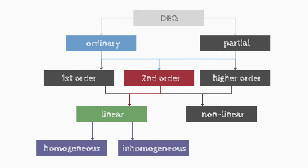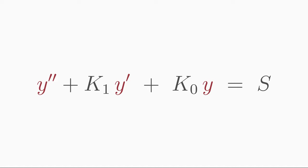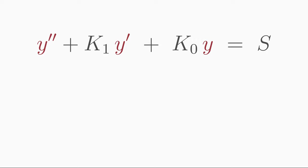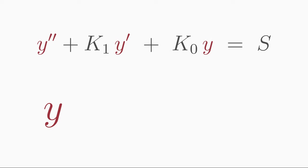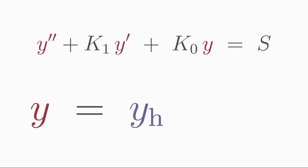The general form of a second-order linear differential equation looks like this: y double-prime plus k1 times y prime plus k0 times y is equal to s. Here we assume that the coefficients k1 and k0, as well as the perturbation function s, are independent of x — they are constants. If the perturbation function is not zero, then you must first ask a mathematician, who will tell you that a general solution y of an inhomogeneous linear differential equation is composed of two parts.